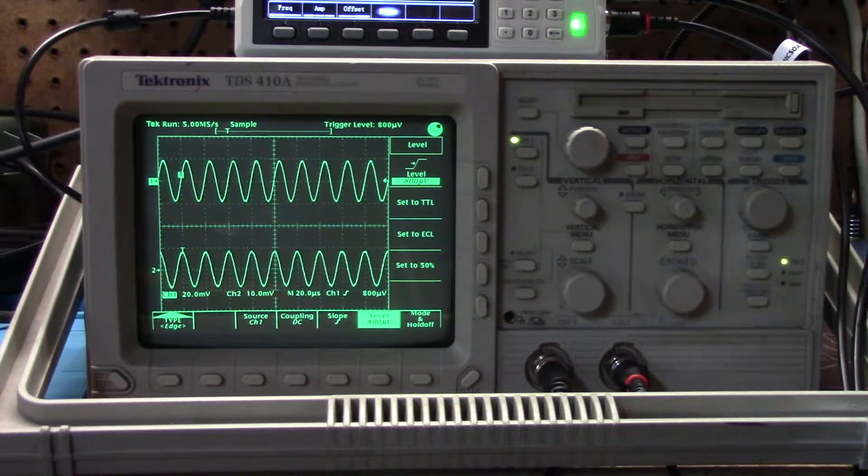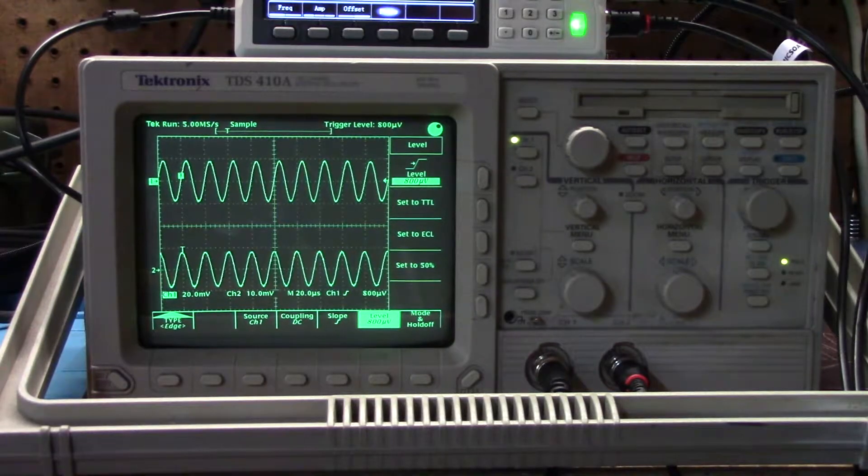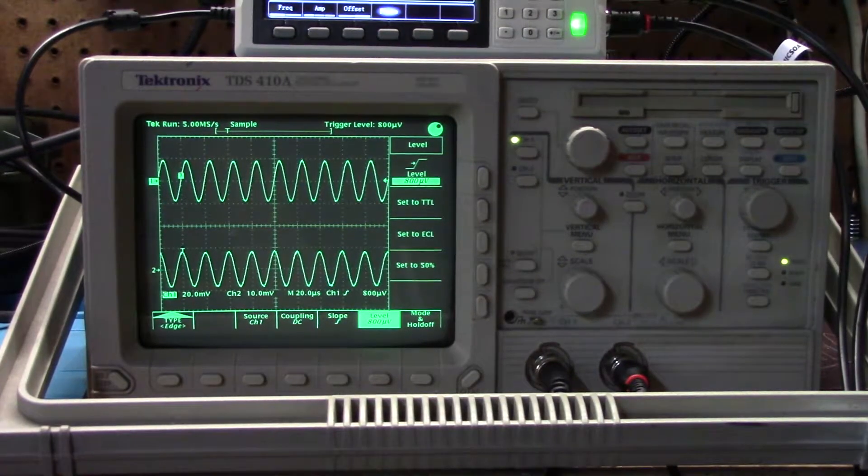The scope itself weighs about 20 pounds. It's about two feet long, 18 inches wide, and about 8 to 10 inches tall. This is a two channel scope and it's a 200 megahertz two channel scope. It has some interesting features that come with it.